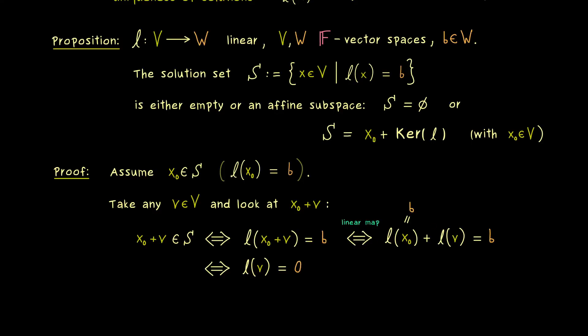And essentially this is it, because it means that v has to lie in the kernel of l. So there we have it. This shows the form of the solution set, and this form also explains why we know that the kernel tells us about uniqueness.